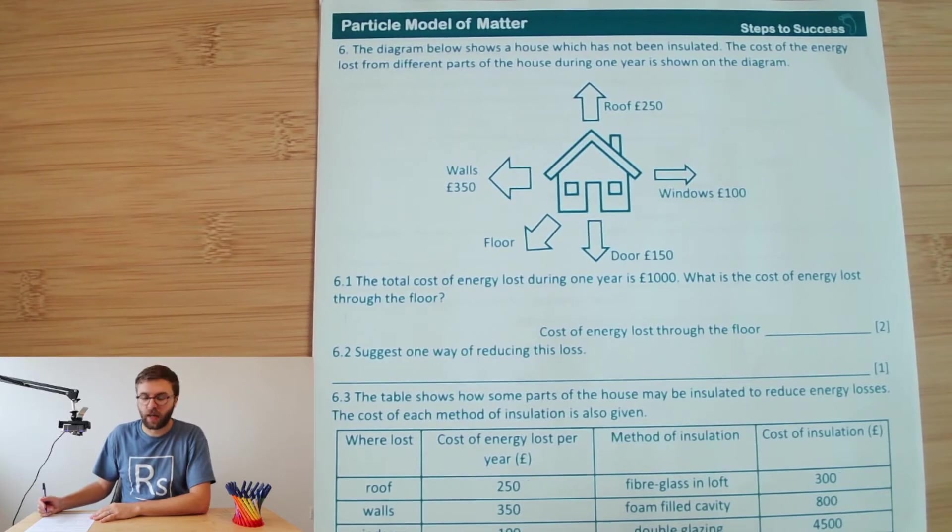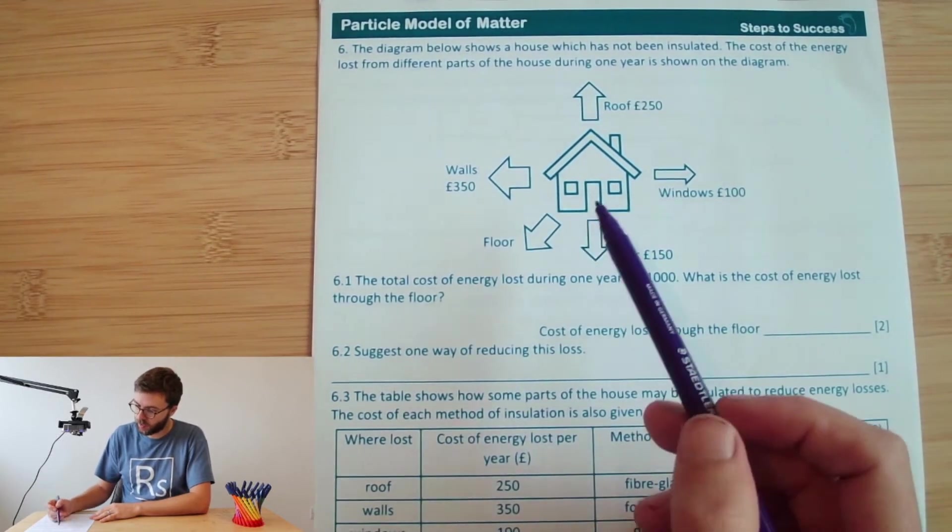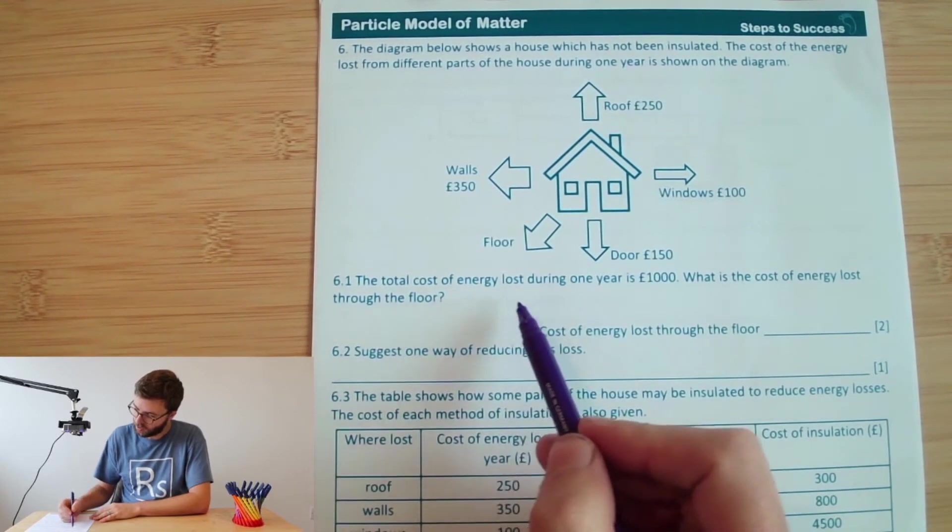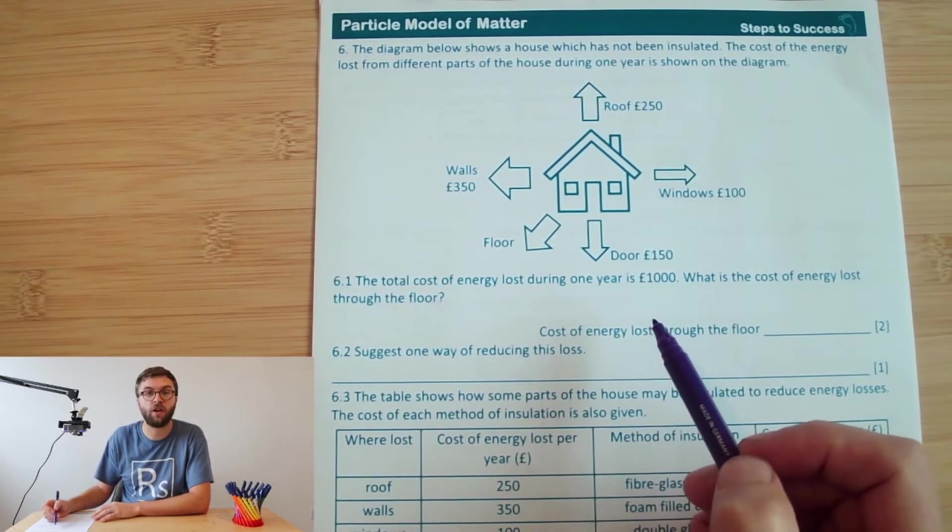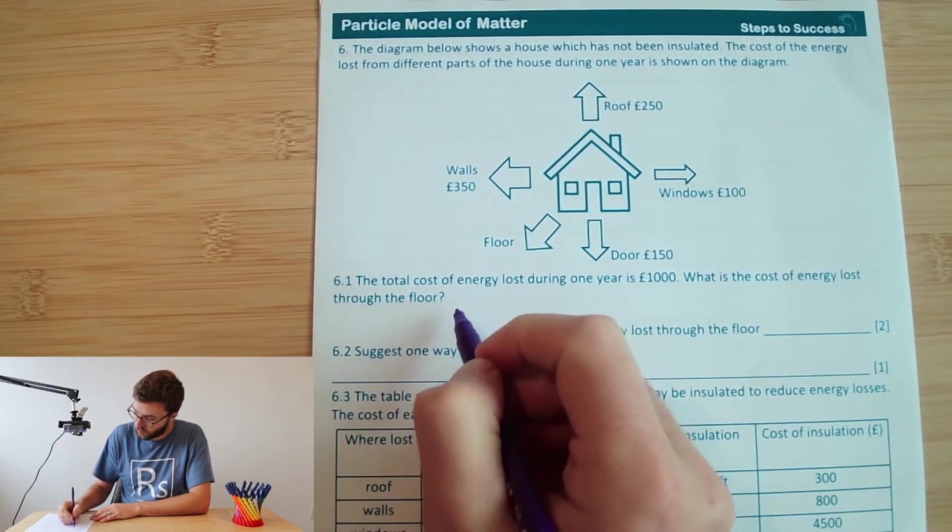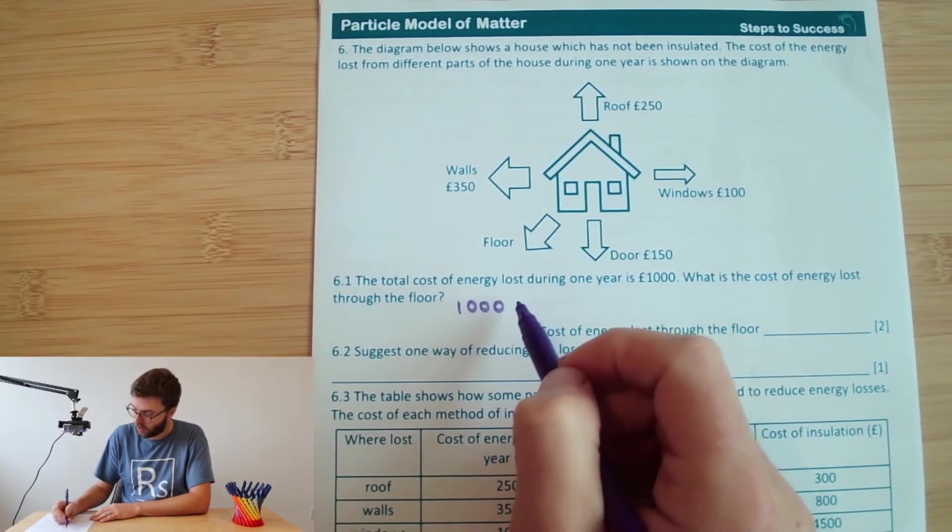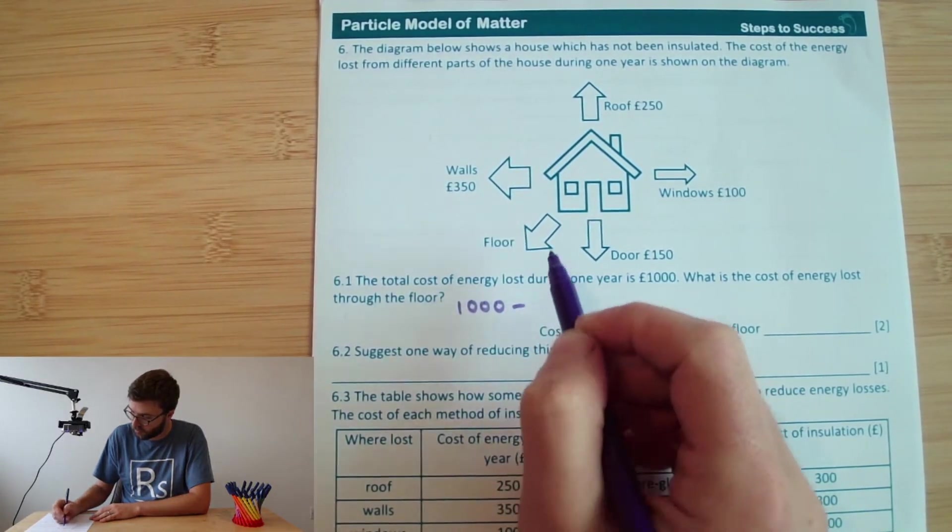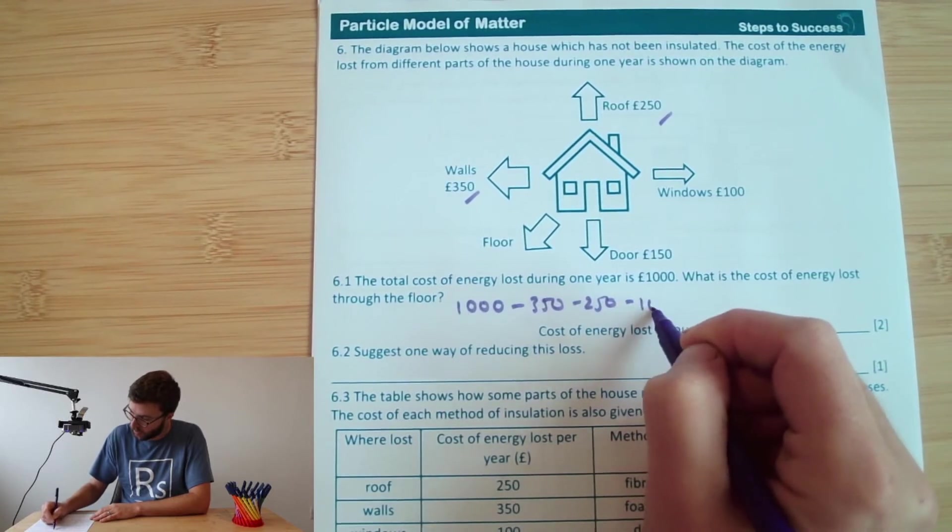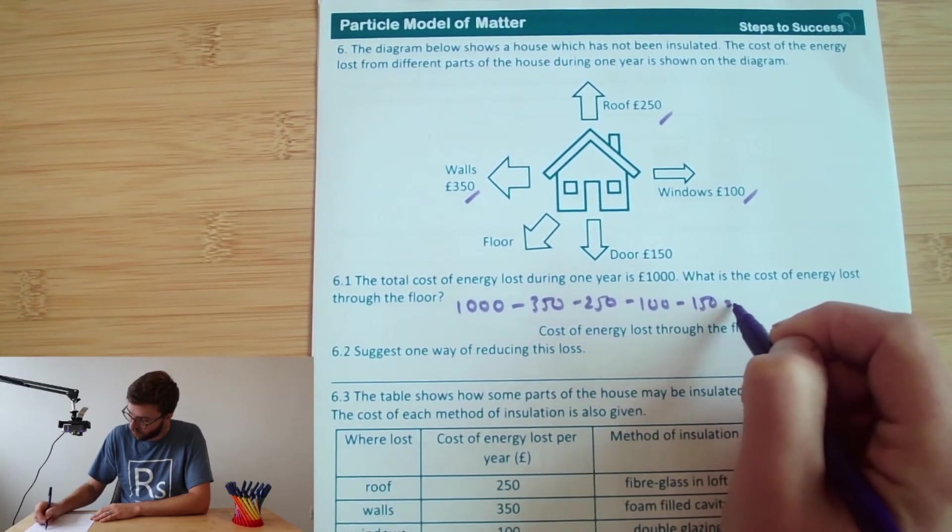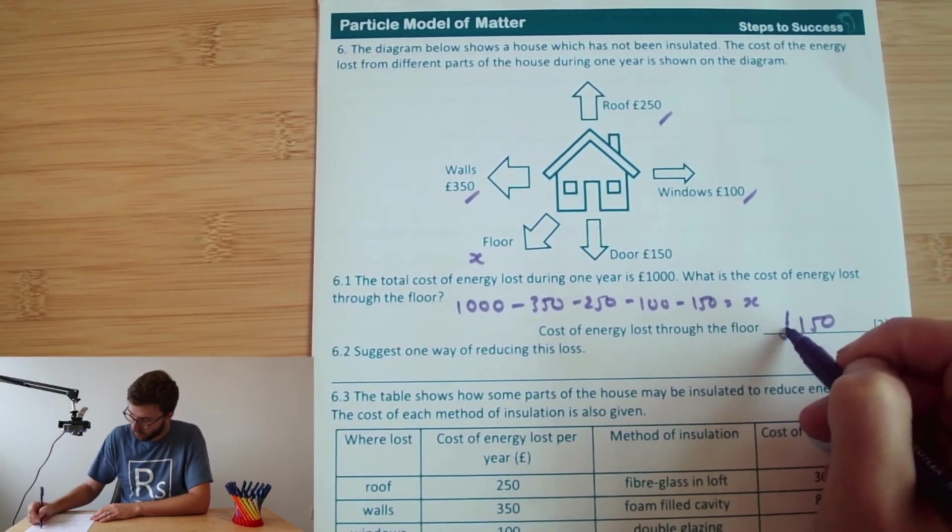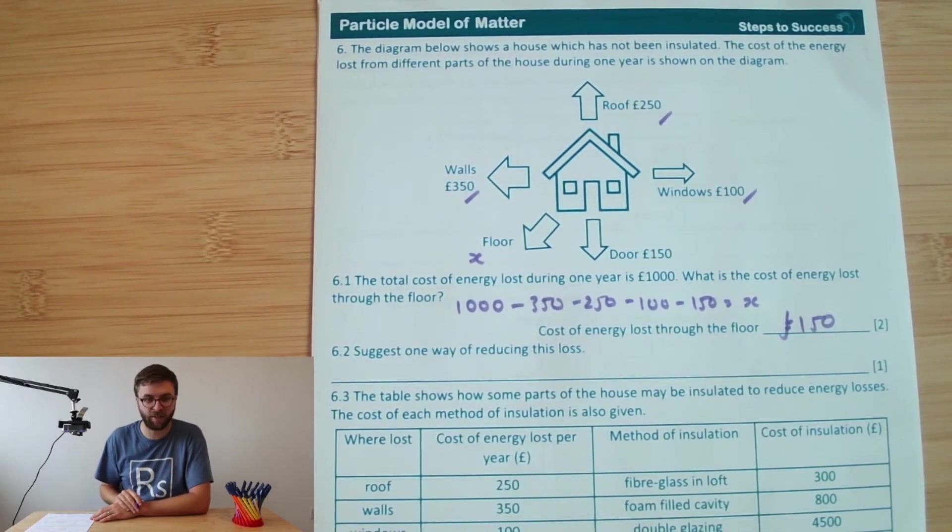Okay, let's move on. Question six. We've got our house which hasn't been insulated and it's showing you the energy losses from the different parts of the house and the cost of those for one year. So the total cost of energy lost in one year is a thousand pounds. What is the cost of energy lost through the floor? We can see that every other one is labeled and the floor is not. So therefore we know that the total, which is a thousand, will be made up of all of those different costs. So if we minus all of them off, so minus 350, minus 250, minus 100, and minus 150 will equal x, what's on the floor. And if we work that on our calculators, we can see there's 150 pounds that's remaining, which must be made from the floor.